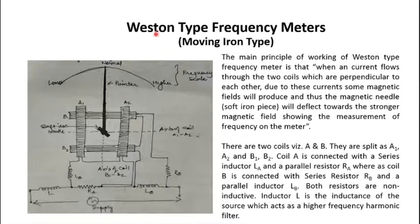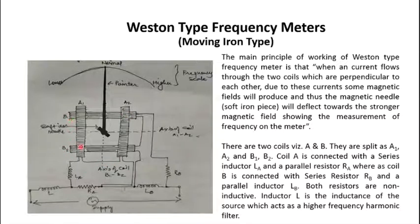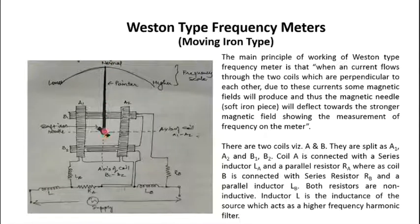The third frequency measurement instrument is the Western type, also known as moving iron type frequency meter. It has two coil sets A and B, each split into two parts connected in series: A split as A1 and A2, and B split as B1 and B2. Both have their own axes of flux generation. In the center of both, a moving iron piece with a rigidly connected pointer is kept on a pivot and spindle. It moves over a calibrated scale where the center indicates normal frequency (50 Hz per Indian standards), while lower and higher frequencies are indicated on the left and right sides respectively.